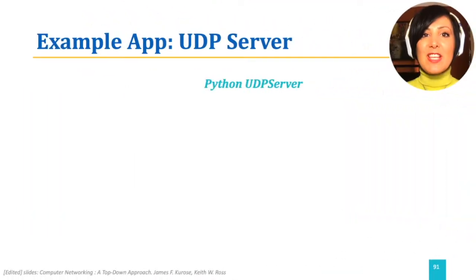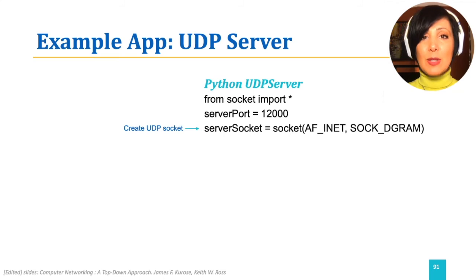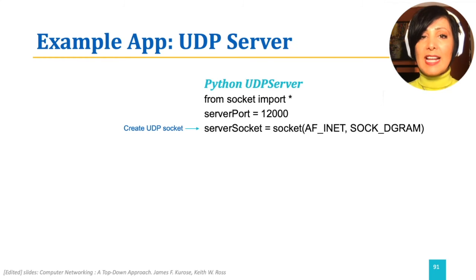The UDP server program also starts with including Python's socket library and defining the server port — exactly the same number that the client used, so that communication is possible. In the next line, we create the UDP socket for the server. It uses the same parameters as the client: AF_INET to define the address family as IPv4, and SOCK_DGRAM to define that this is a UDP socket.